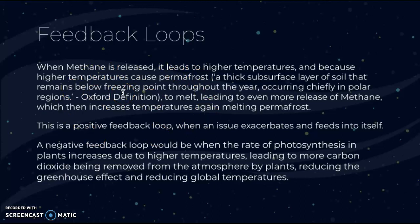This also links with terrestrial albedo. When snow and permafrost melt, the terrestrial albedo effect is lessened because there are fewer reflective surfaces to reflect sunlight. This warms the Earth even more, which feeds back into itself — another example of a positive feedback loop connecting methane release and terrestrial albedo.